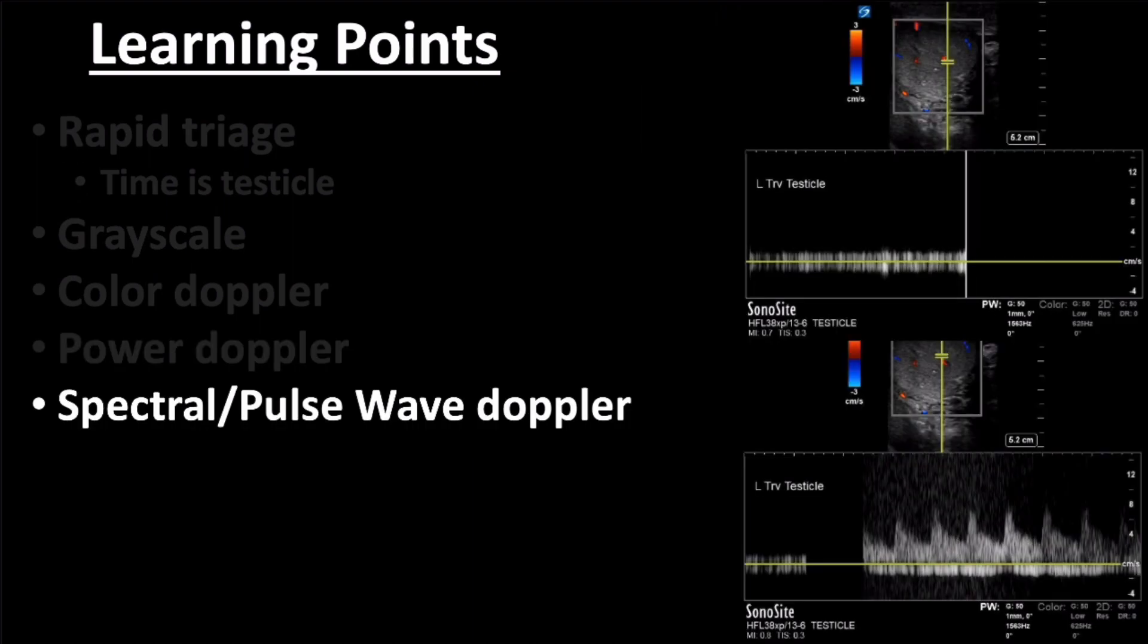While quite easy, utilization of spectral and pulse wave Doppler might be beyond the comfort level of many viewers, yet inclusion of this step is essential to perform a true torsion rule out study. This step will be performed in any radiology-performed study.